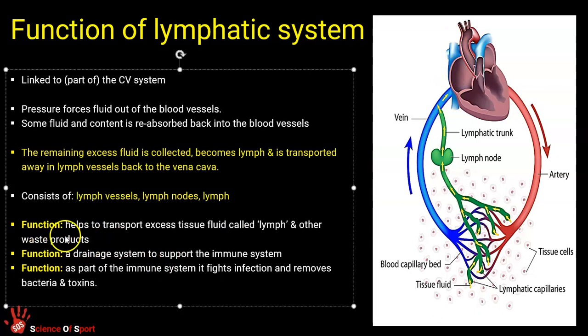So three functions of the lymphatic system. Firstly, to help transport excess tissue fluid called lymph and other waste products away from our capillary system. So the green network of vessels transports excess fluid away and the fluid is called lymph in those vessels. It's a drainage system to support the immune system. So we know this is part of the immune system. And in that role of protecting us, as our immune system does, there are white blood cells in the lymph nodes that help attack bacteria and toxins. And we drain and take away toxins as well. So it's very much a transport system and a protective immune related system.